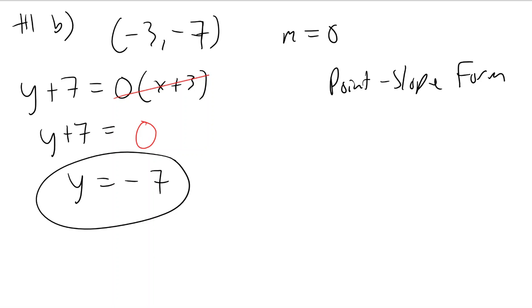Really, as soon as you see this, the only type of line that has a slope of 0 is a horizontal line, and the equation of a horizontal line is always y equals a number.